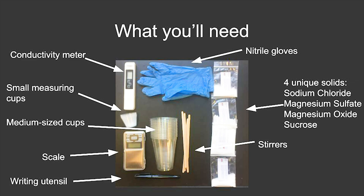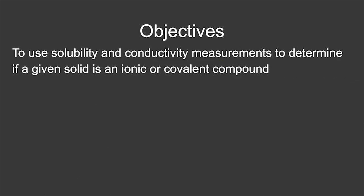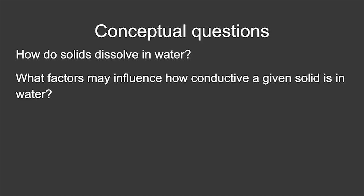Today I'll be using sodium chloride, magnesium sulfate, magnesium oxide, and sucrose. Our main objective today is to use solubility and conductivity measurements to determine if a given solid is an ionic or covalent compound. As we do this, I'd like you to think about two questions: first, how do solids dissolve in water? And second, what factors may influence how conductive a given solid is in water?